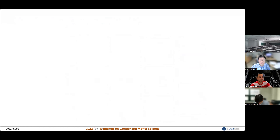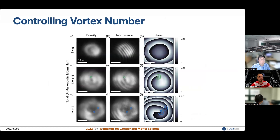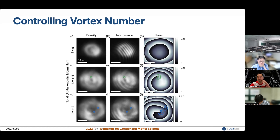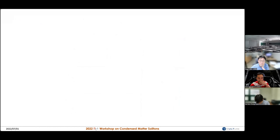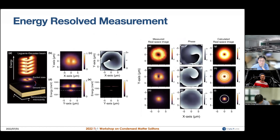We also increased the orbital angular momentum to L=2. The interference pattern shows forking in two different spots, and mapping the phase reveals phase winding around two spots — meaning we created two singly-quantized vortices. This was somewhat surprising because we weren't sure angular momentum was supposed to be conserved, and it turns out it's not strictly conserved.